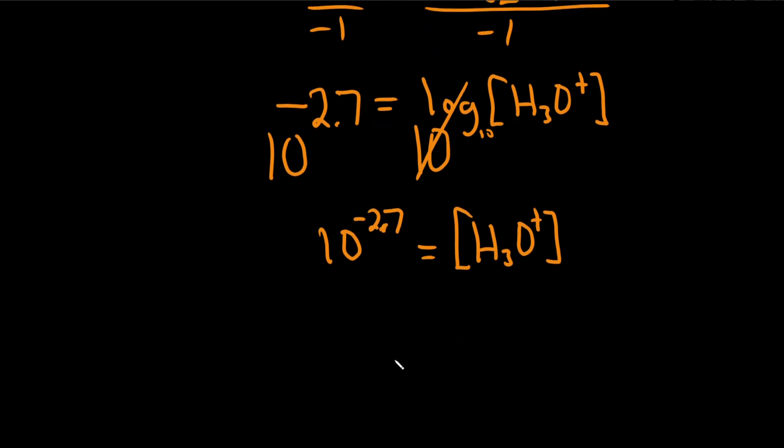So in my calculator, I get the following decimal. I'm going to show you how to turn it into scientific notation. I got approximately 0.001995.